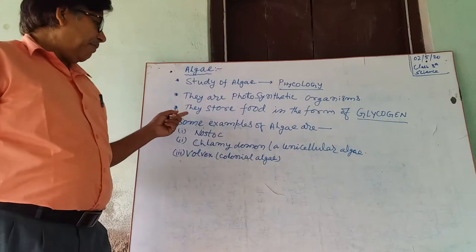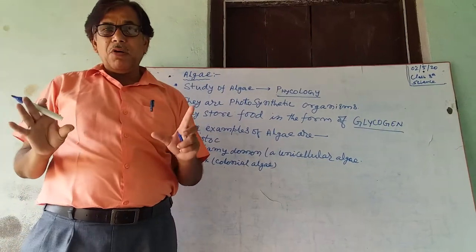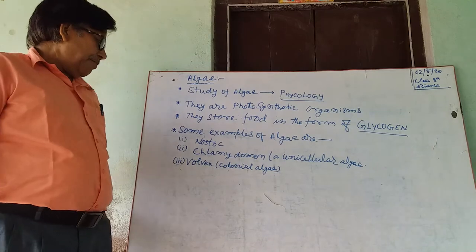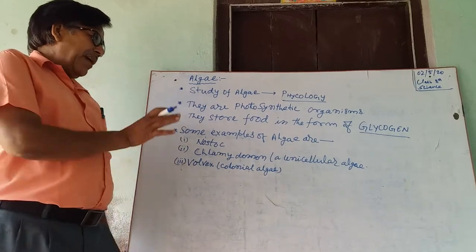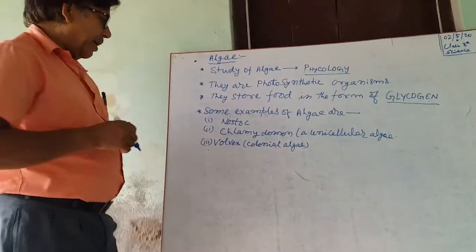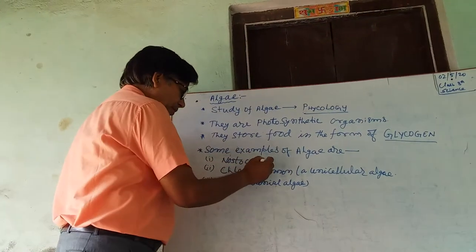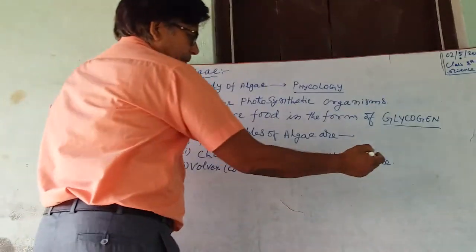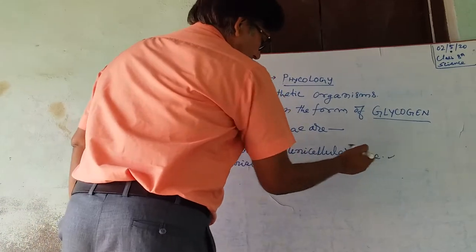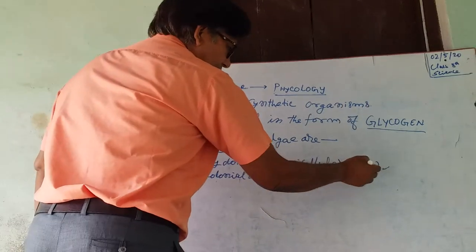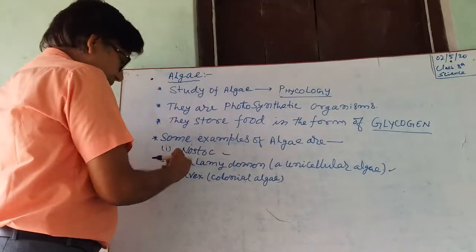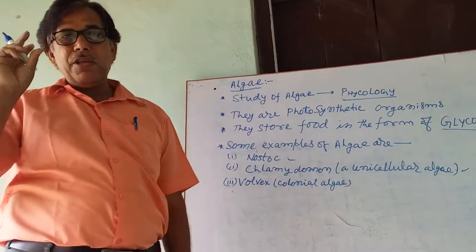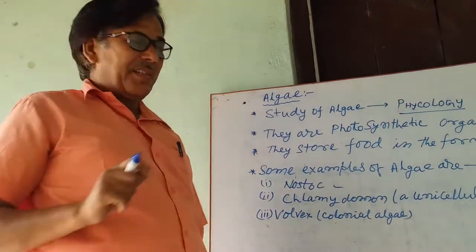Algae store food in the form of glycogen. Some examples of algae are Nostoc and Chlamydomonas. They are unicellular algae, meaning their bodies are made up of only one cell.